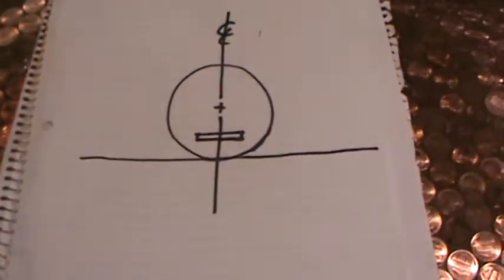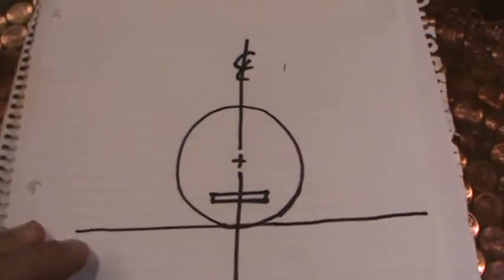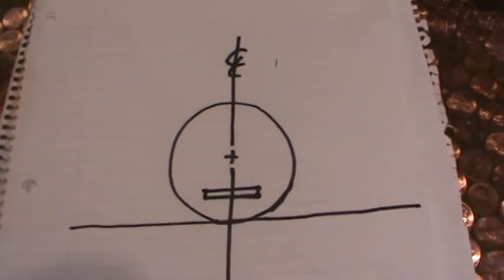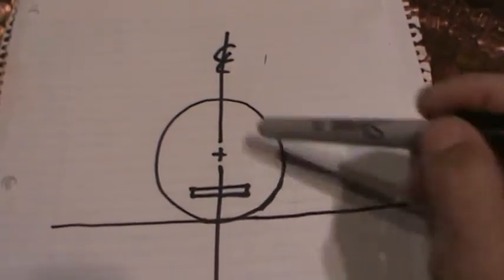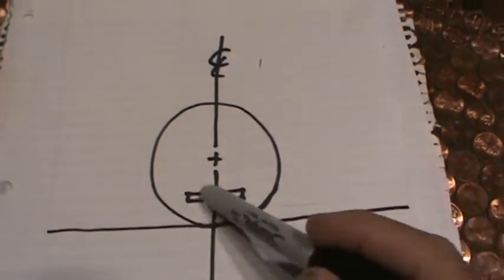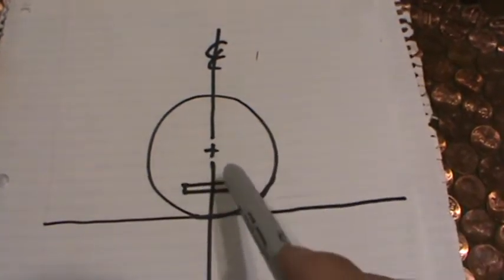In this picture you can see the unicycle on level ground. You have the ground represented by this line, the center of the unicycle here, and the pedal.